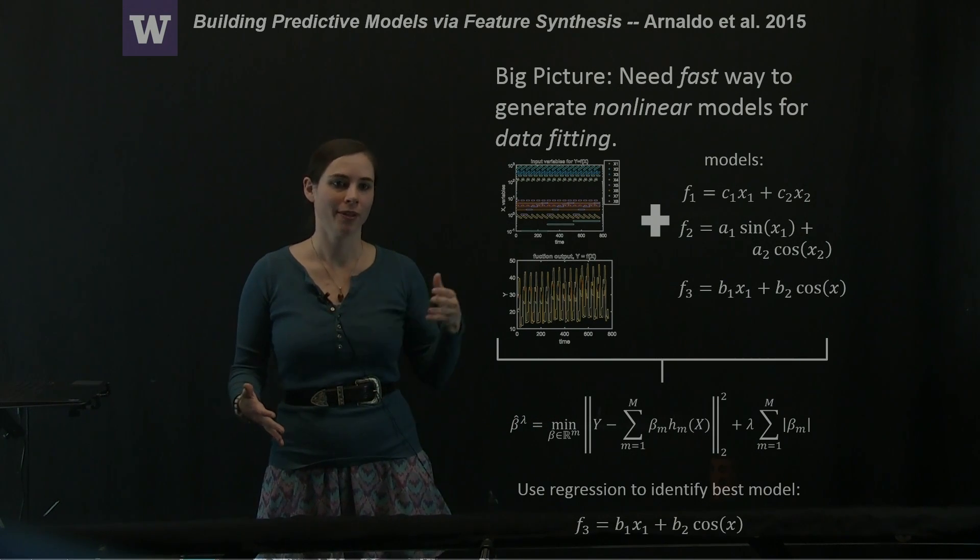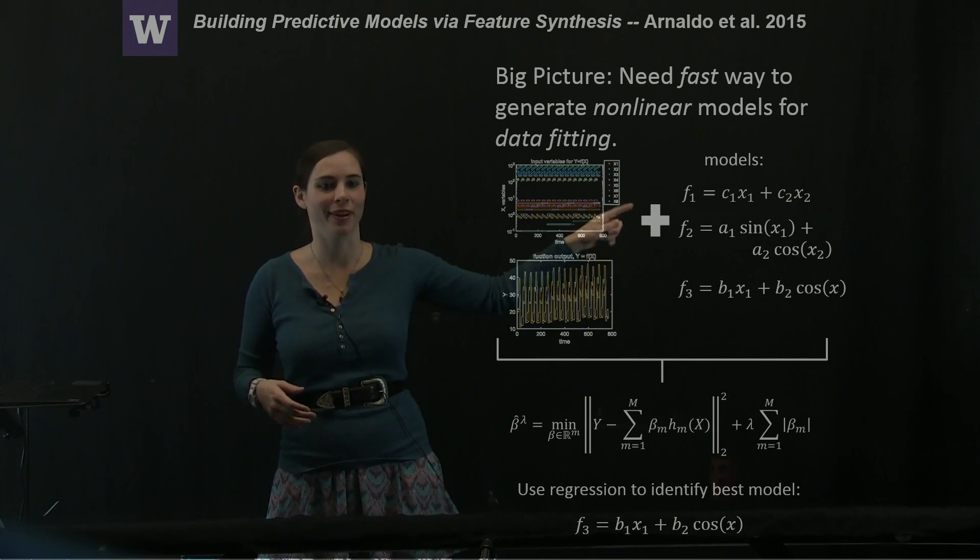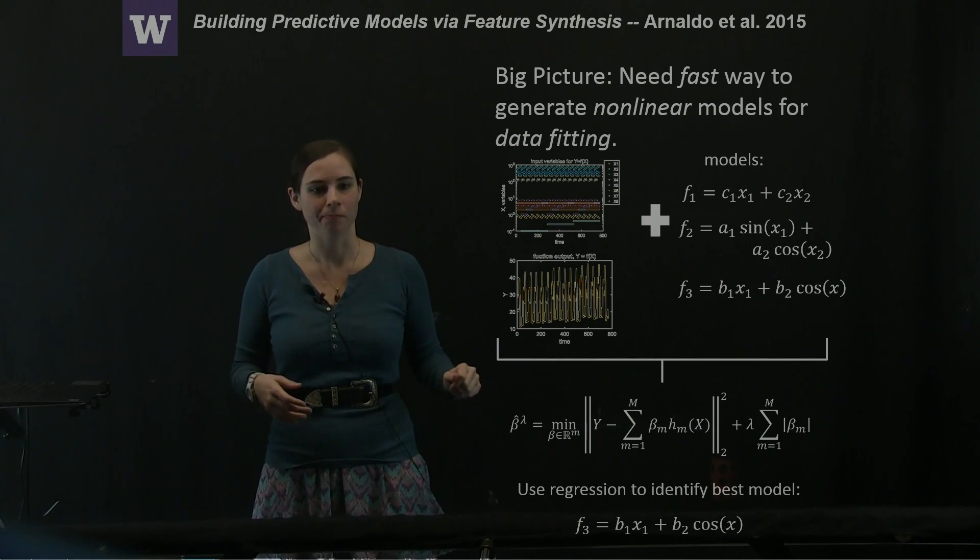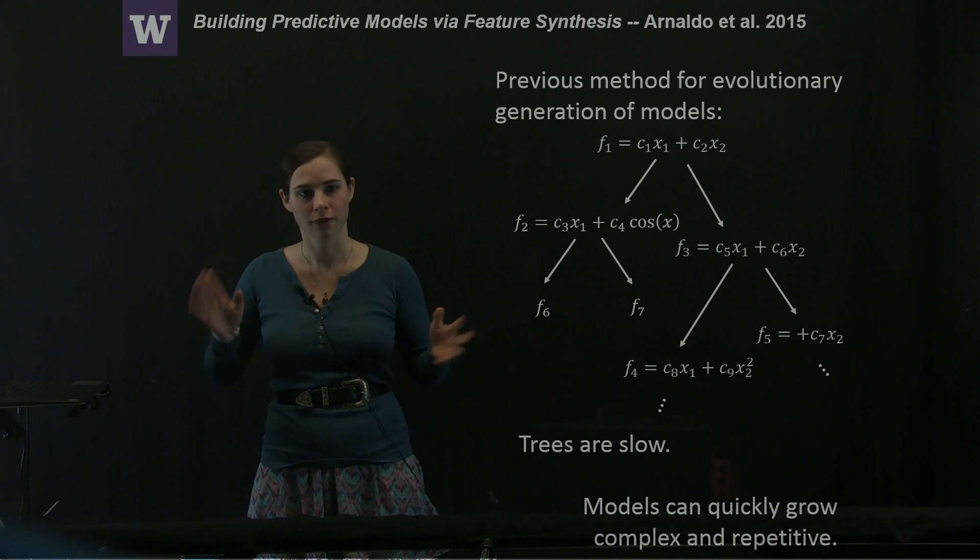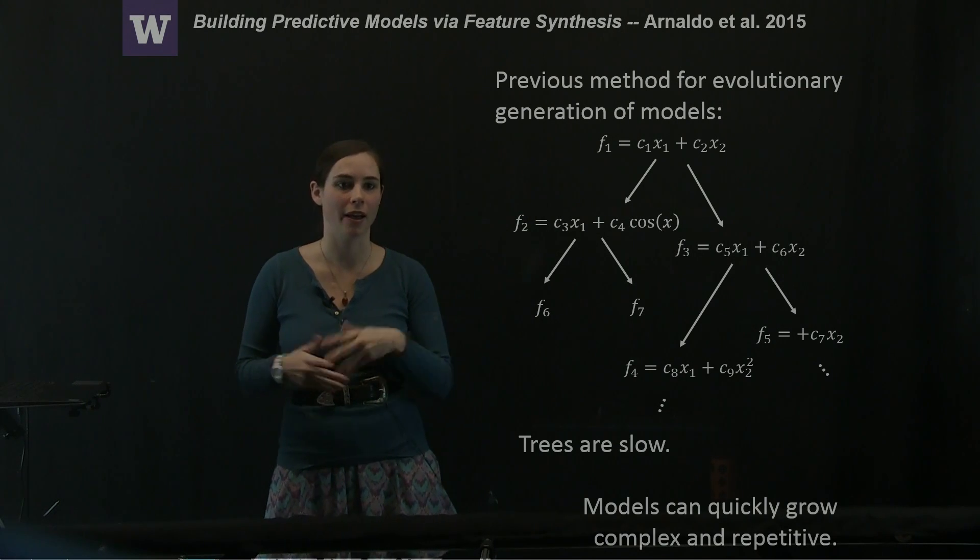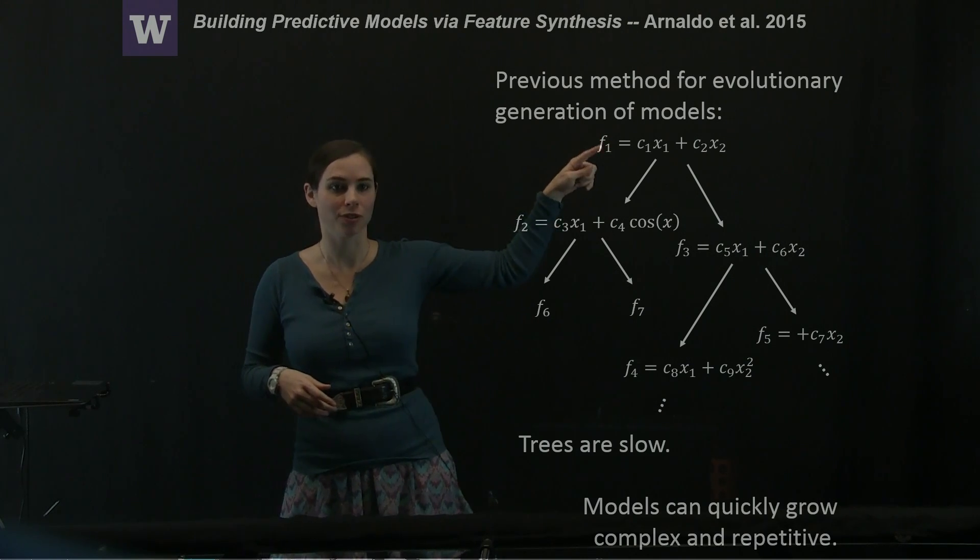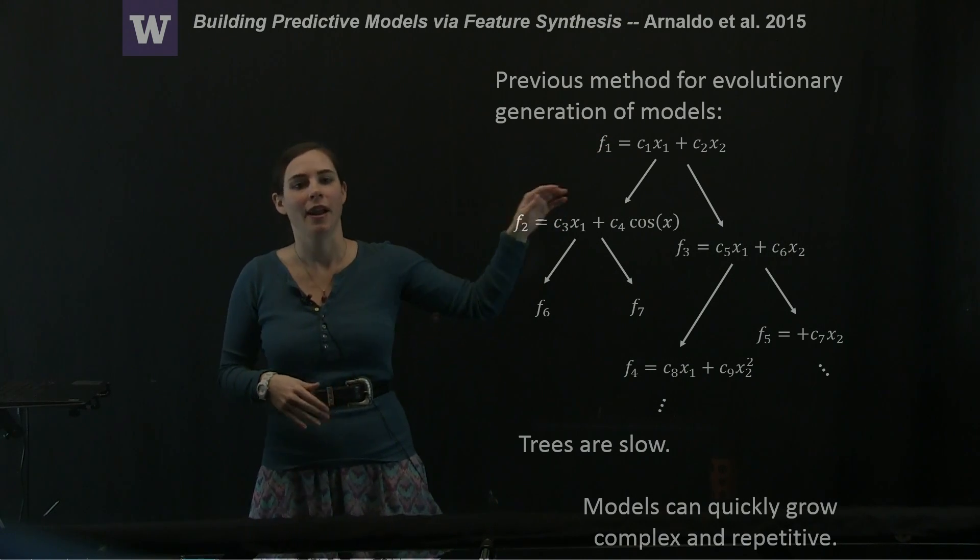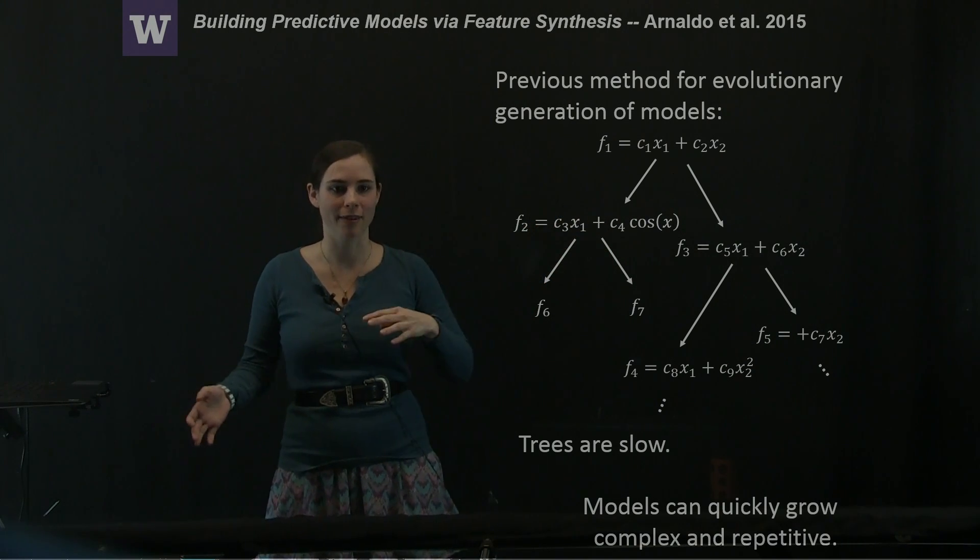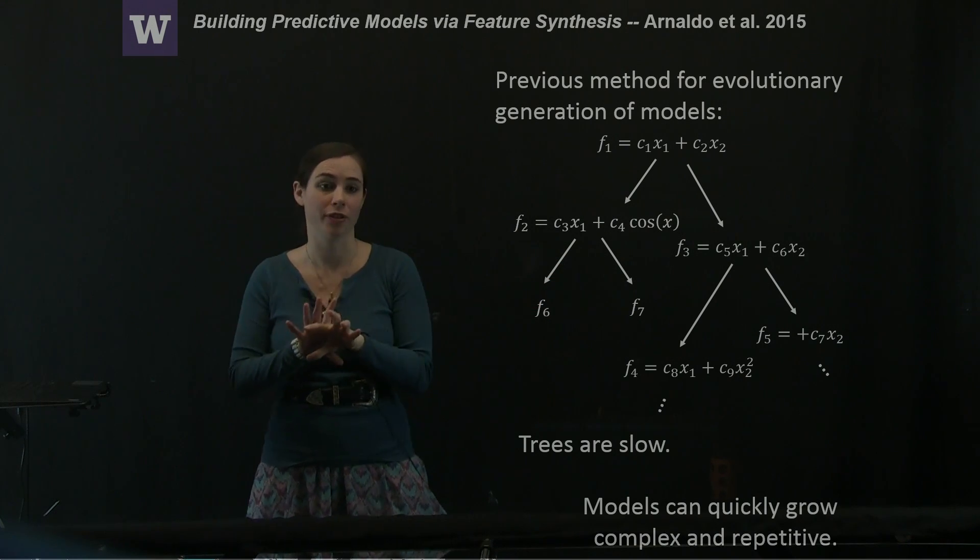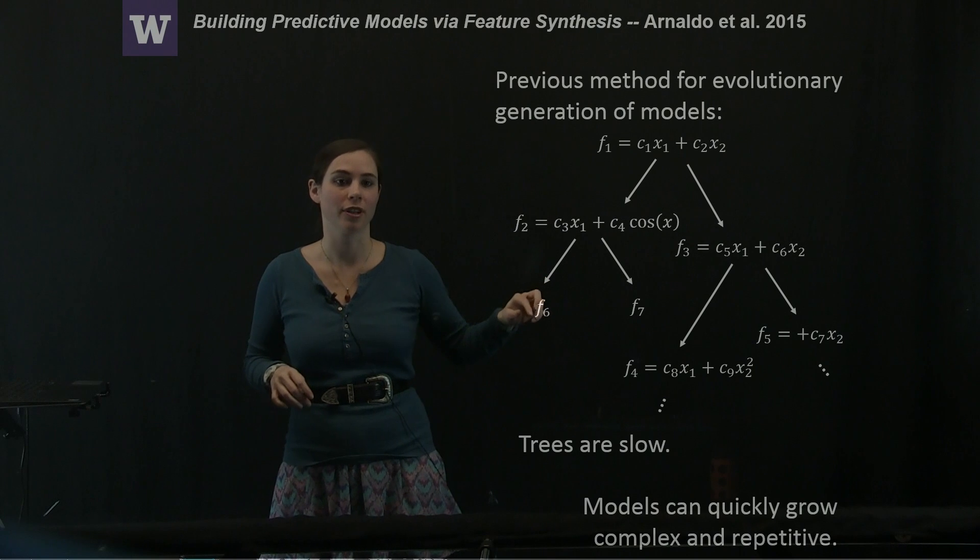One of the main focuses of this paper is how to quickly generate these models. A previous method for generating those models is evolutionary generation. They start with some initial seeded model and perform mutations off of that model, either random or sometimes combining models together that work well to produce some subset of new models in generation two.